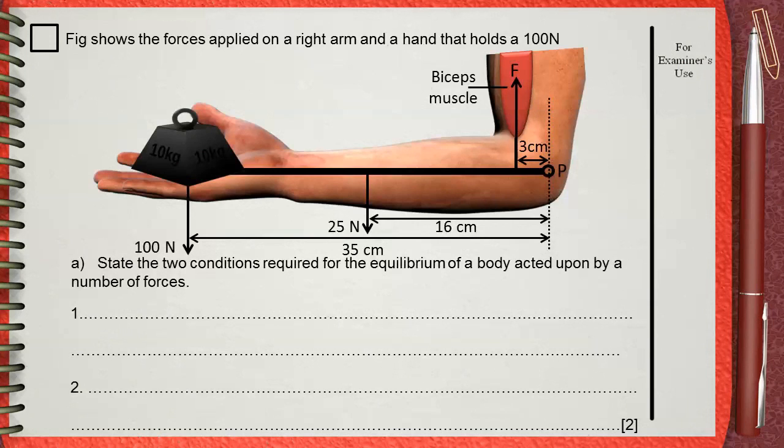The figure shows the forces applied on a right arm and a hand that holds 100 newtons. State the two conditions required for the equilibrium of a body acted upon by a number of forces.